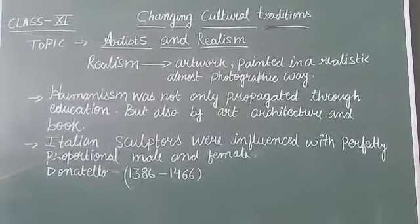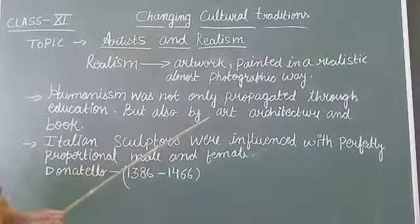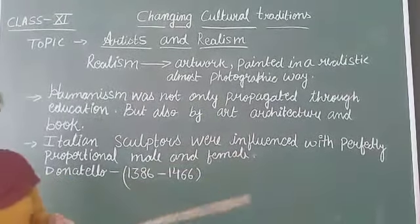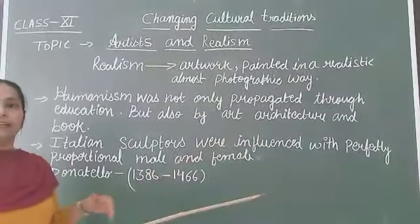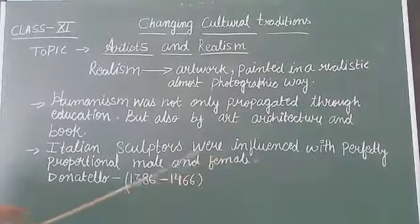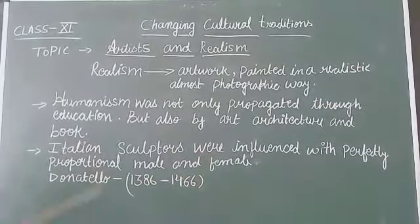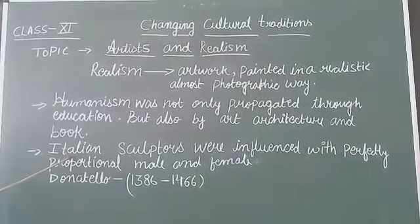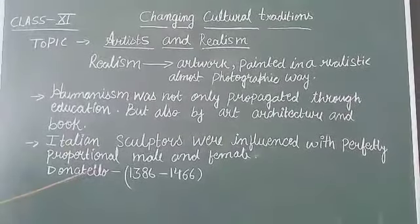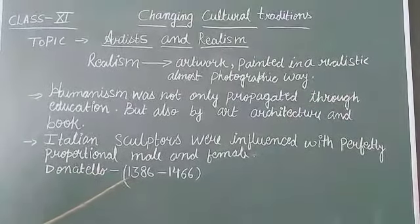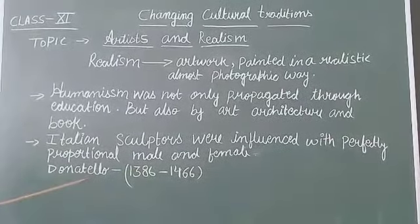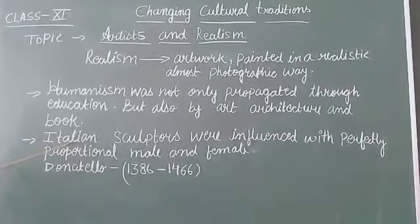After this, you will see the Italian sculptors were influenced by the perfectly proportional male and female form. So whatever the structures were made in Italian society, the theme was based on male and female proportions. The first sculptor of European society was Donatello, whose time period was 1386 to 1466. He was the first sculptor of Italy.